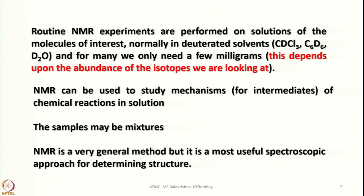This depends on the abundance of the isotopes we are looking at. If it is 100% abundant, a very small quantity is sufficient, but if the percentage of NMR-active nuclei is small, then we need more sample. NMR can also be used to study mechanisms and to get an idea about transient states or intermediates of chemical reactions in solution — especially it can provide more information when you perform a chemical reaction in solution medium.